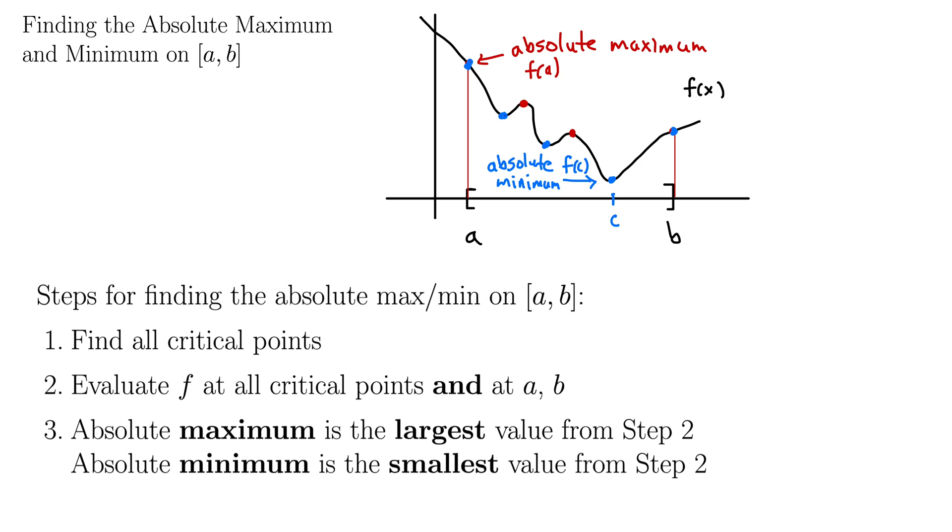So step one is find all critical points. We do that using the derivative and noting where the derivative either equals zero or does not exist, making sure those points are in the domain of the function itself. Step two, evaluate f at all critical points and the endpoints a, b. So we're going to take all these possible maxes and mins and one by one plug them into f, not the derivative. We want to plug them back into the original function and just check which one's the biggest and which one's the smallest. That's step three. The absolute maximum is the largest value from step two and the absolute minimum is the smallest value from step two.